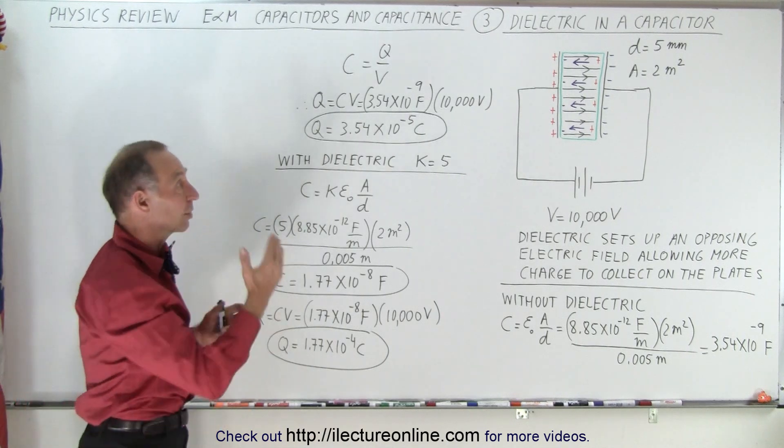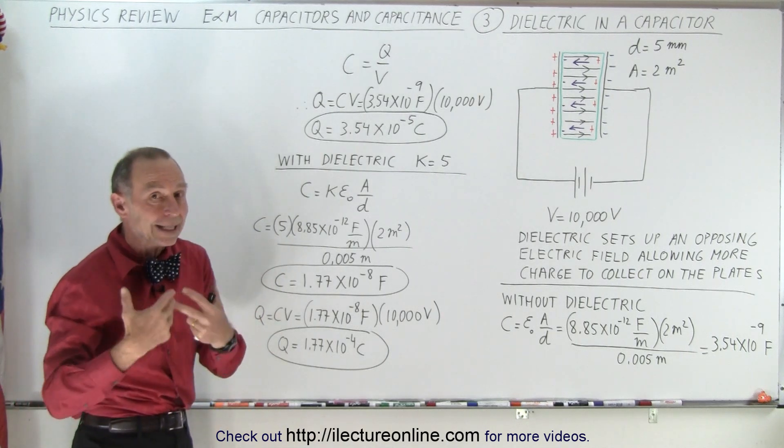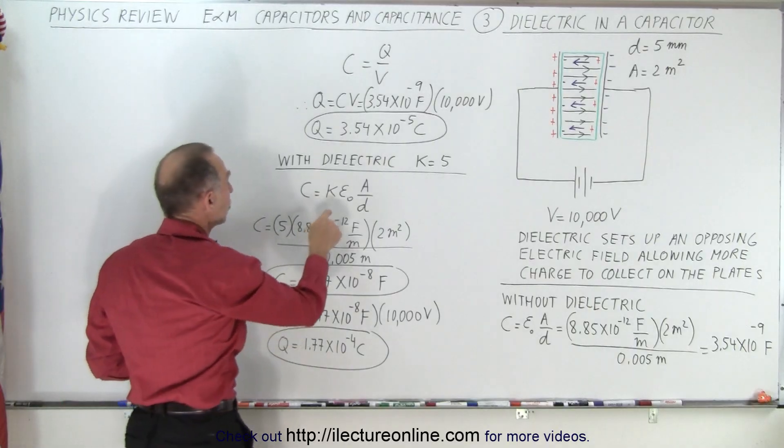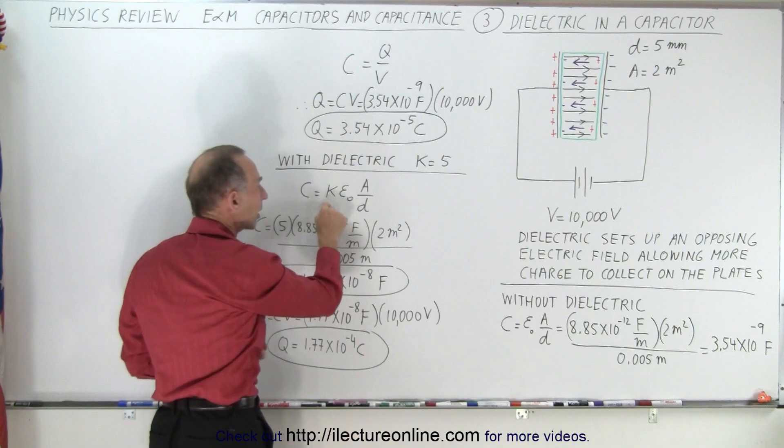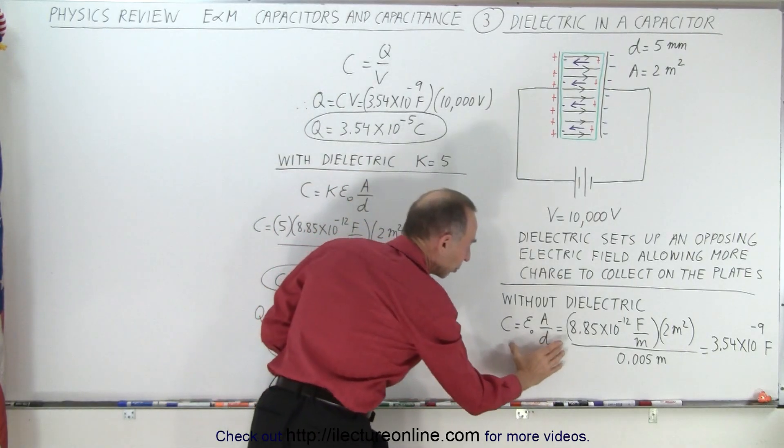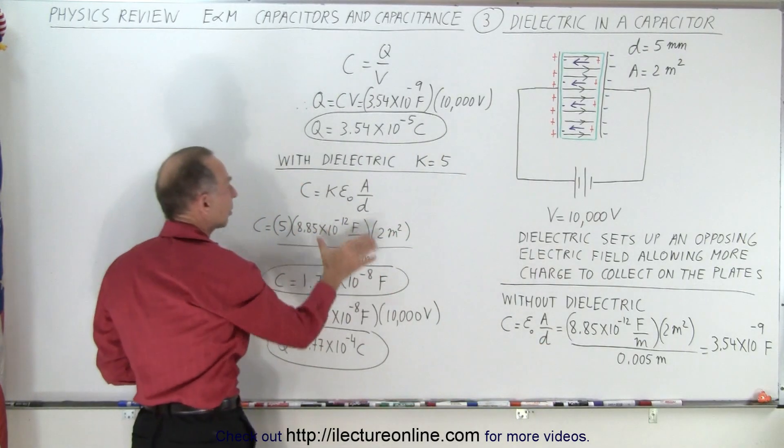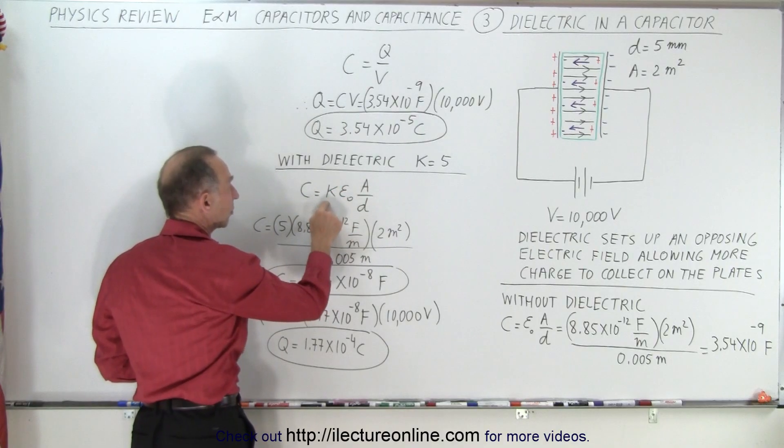But if you now place a dielectric in there, a dielectric has what we call a dielectric constant, the equation then changes to this. You multiply the capacitance times the dielectric constant. So this is the capacitance without the dielectric constant. This is the capacitance with the dielectric constant.